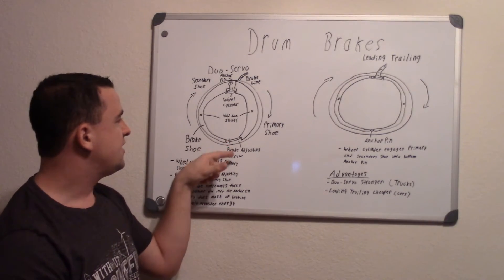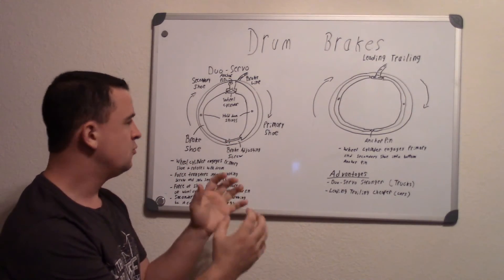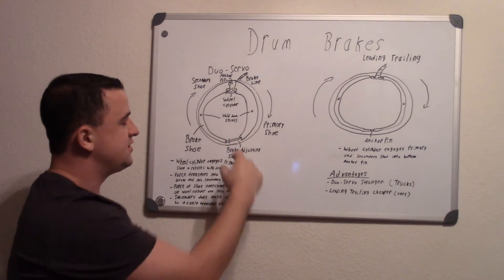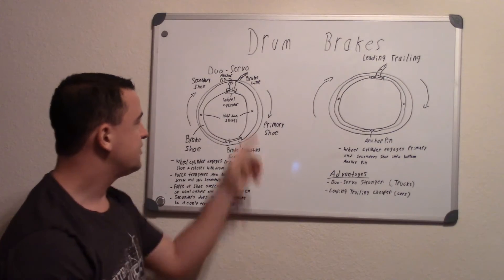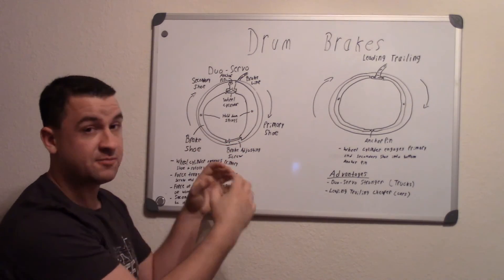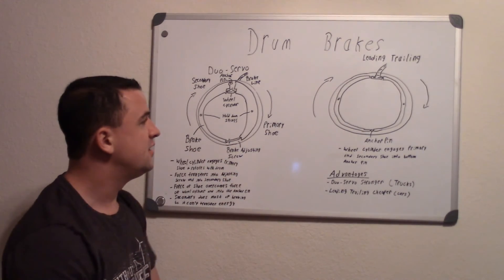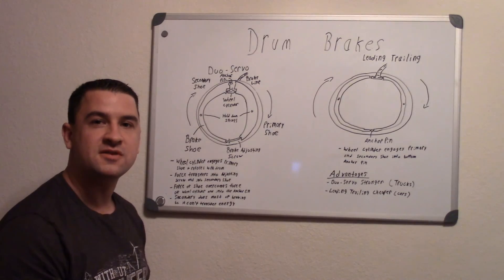This is the one too that because it adjusts it, once your shoes get worn in a little bit you got to adjust this to spread it back out to get in contact with the drum. Because if it's too far in because your shoe is being worn, it won't do the braking as good, so you got to adjust it to spread those out more. And that's pretty much it on drum brakes. Thanks for watching and please subscribe.